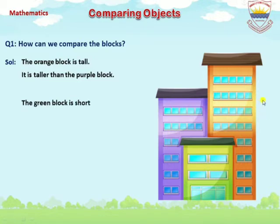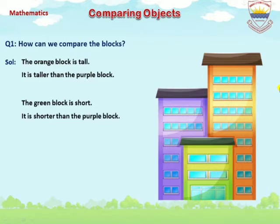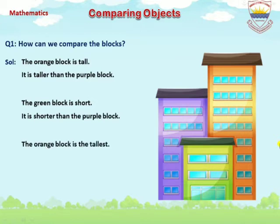The green block is short. Look at the picture — it is shorter than the purple block. As you see in the picture, the green block is short and it is shorter than the purple block.